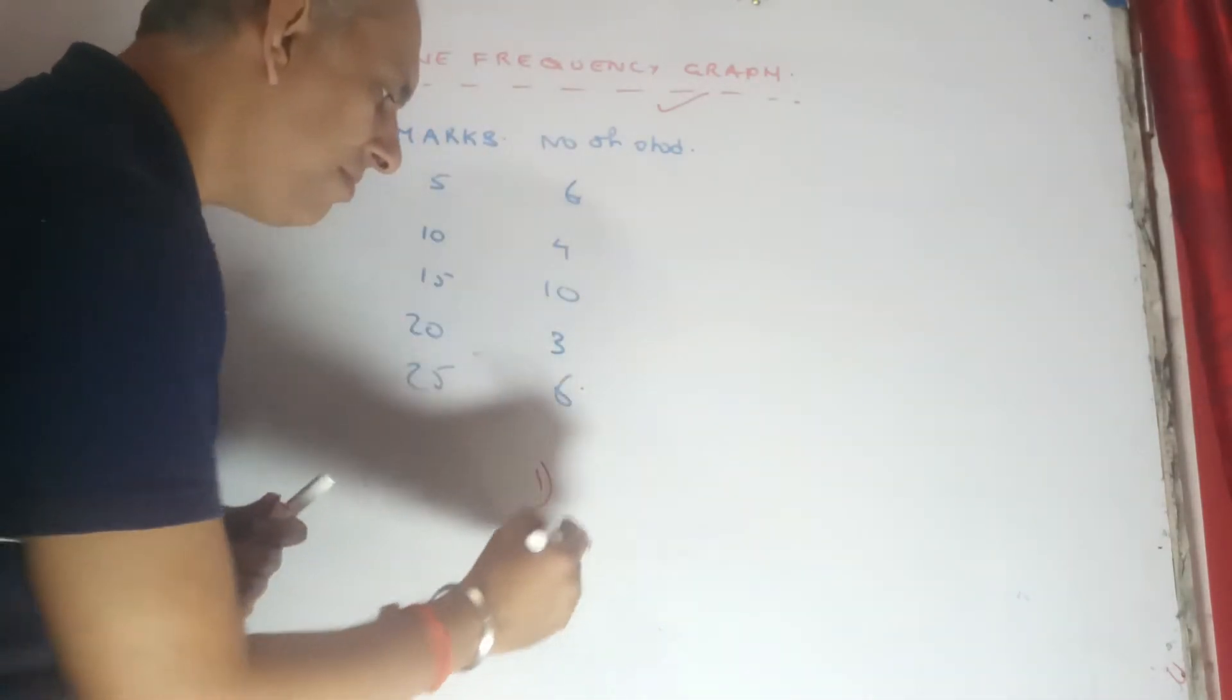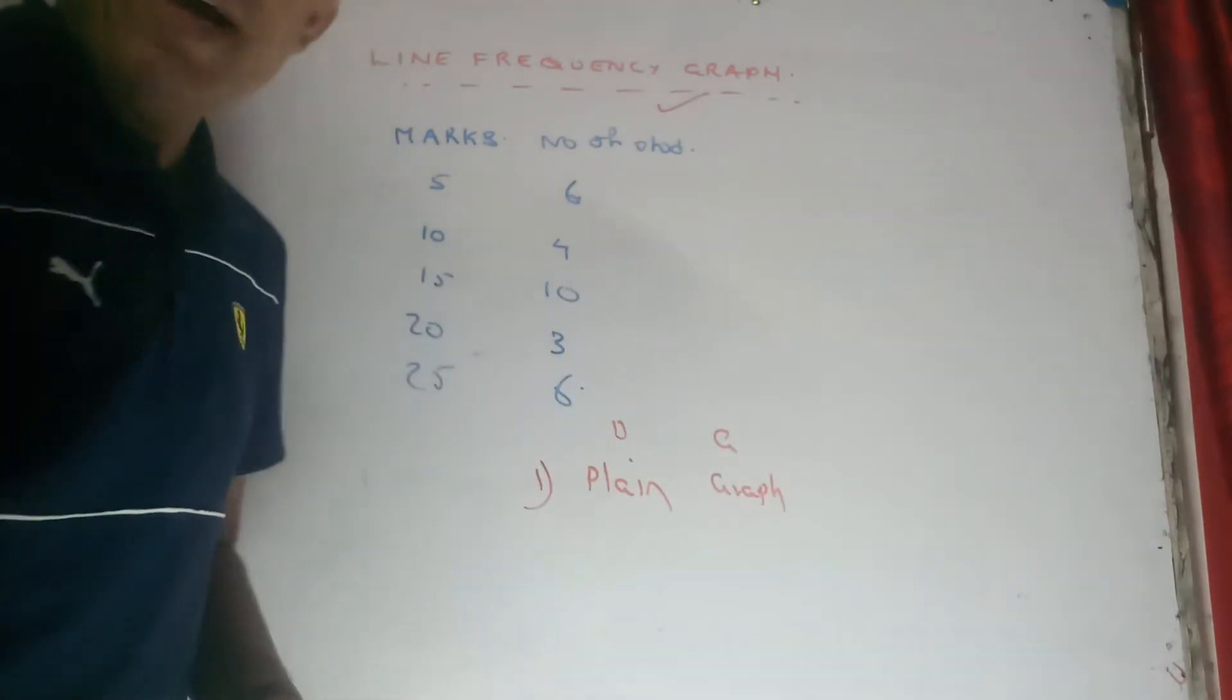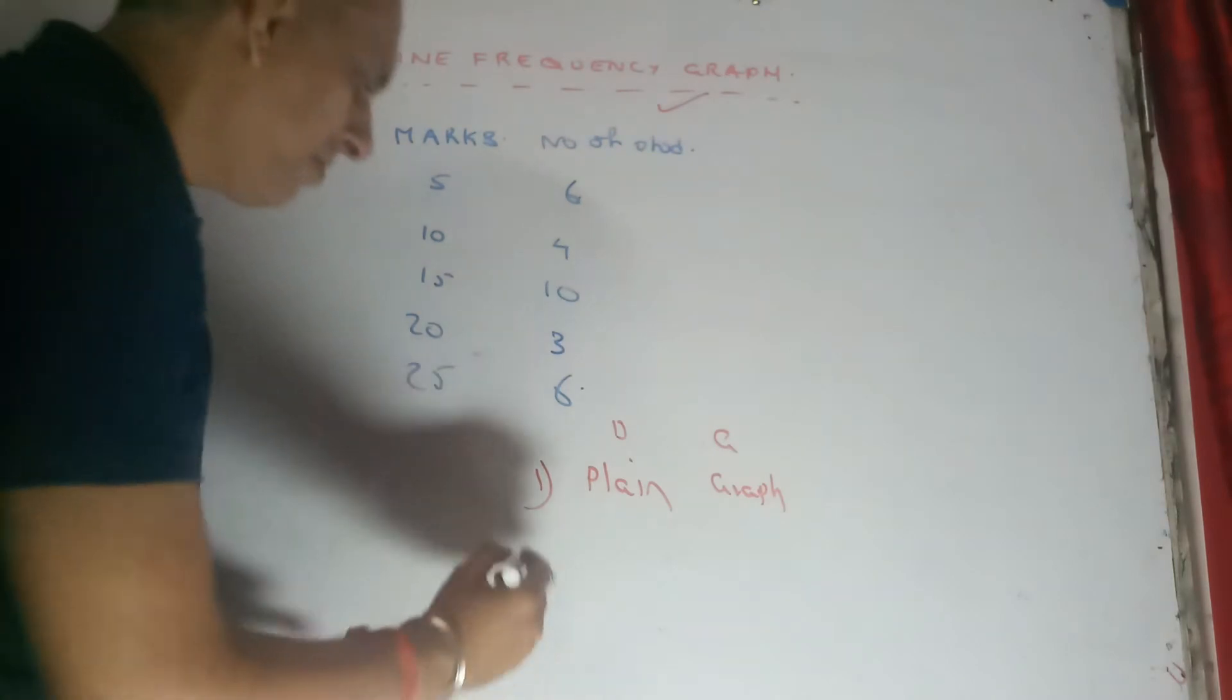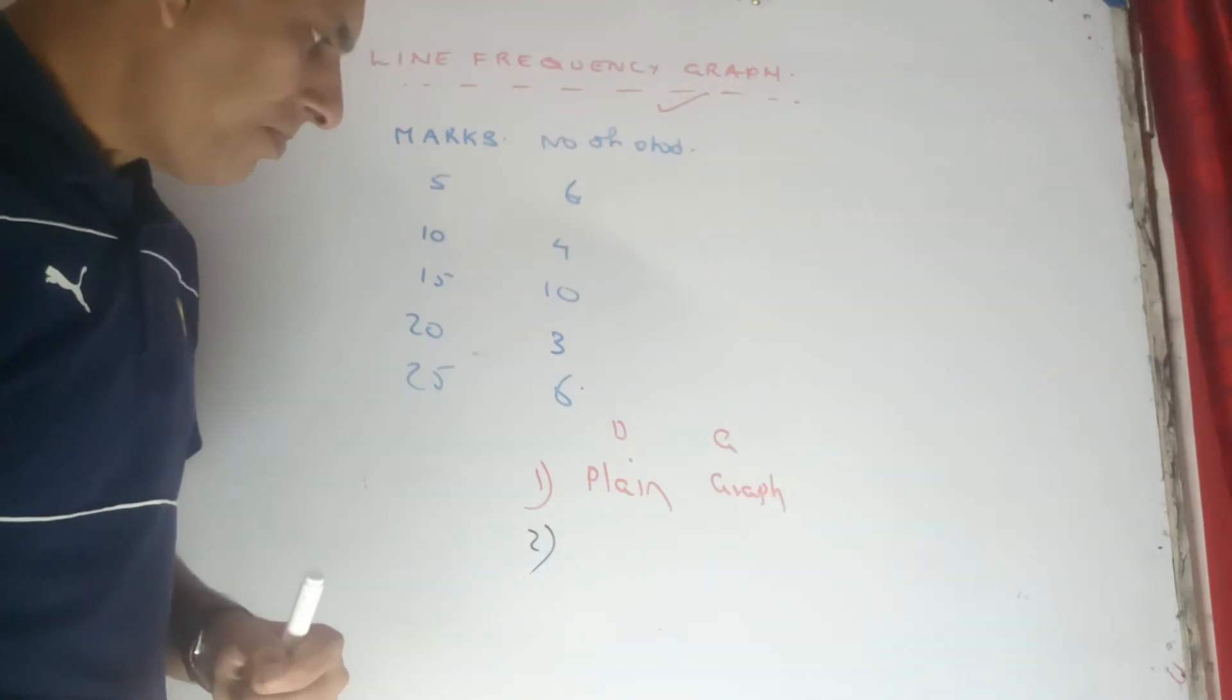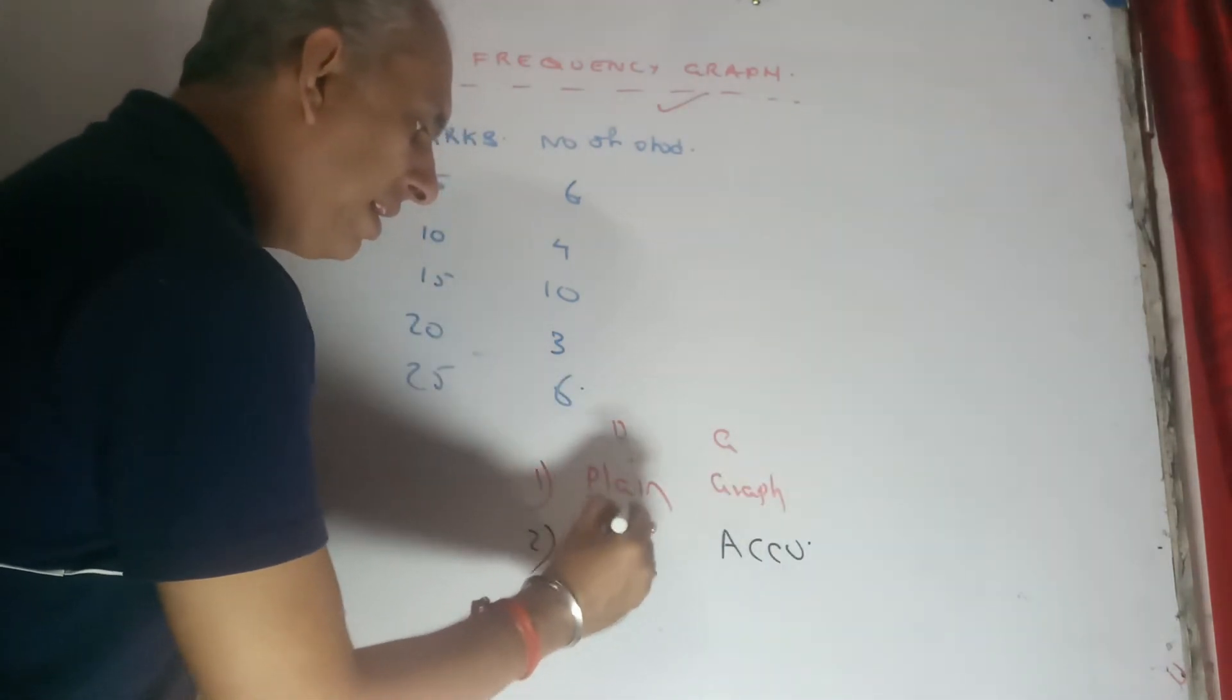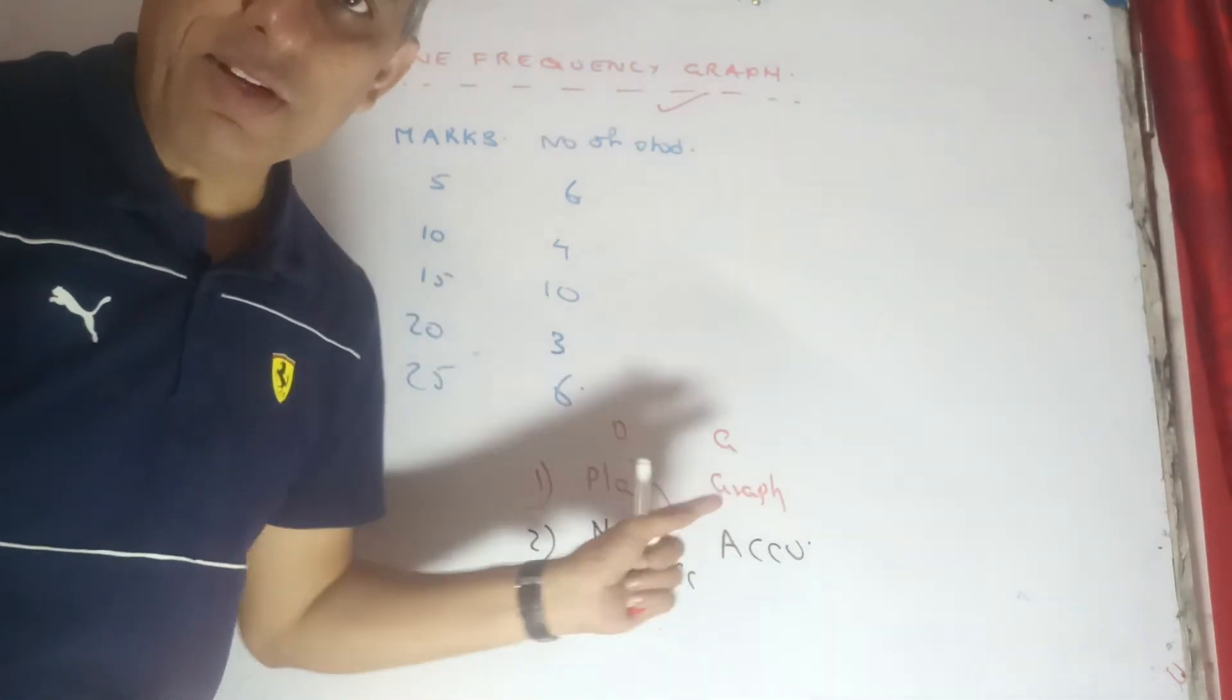Importantly, first thing to be noted: a diagram can be prepared on plain paper, whereas a graph generally should be and is prepared on graph paper. So to start with, that is an important difference for a commoner. Another quick one I can recall immediately is the accuracy part, which is far more in graphs in comparison to diagrams. Naturally, diagrams don't offer that much pinpoint accuracy which you will find in graphical presentation.